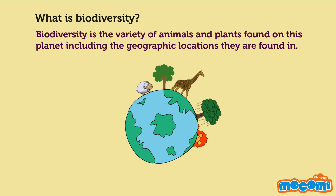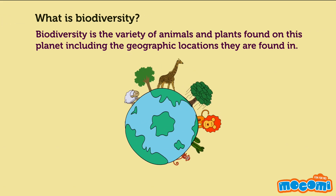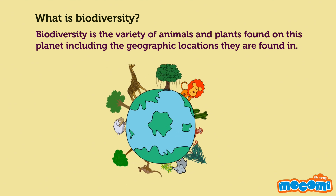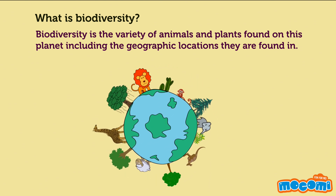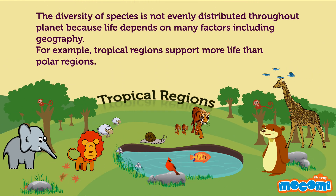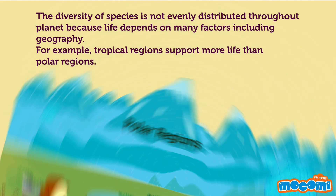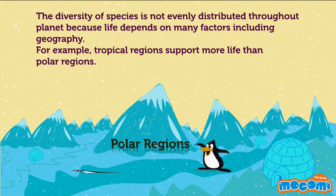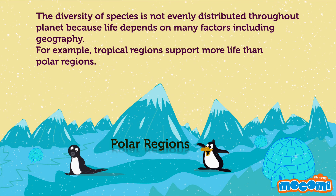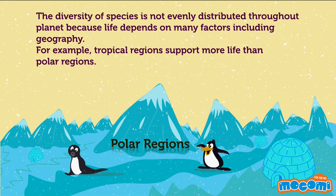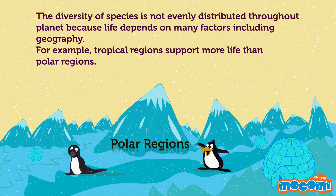Biodiversity is the variety of animals and plants found on this planet, including the geographic locations they are found in. The diversity of species is not evenly distributed throughout the planet because life depends on many factors, including geography. For example, tropical regions support more life than polar regions.